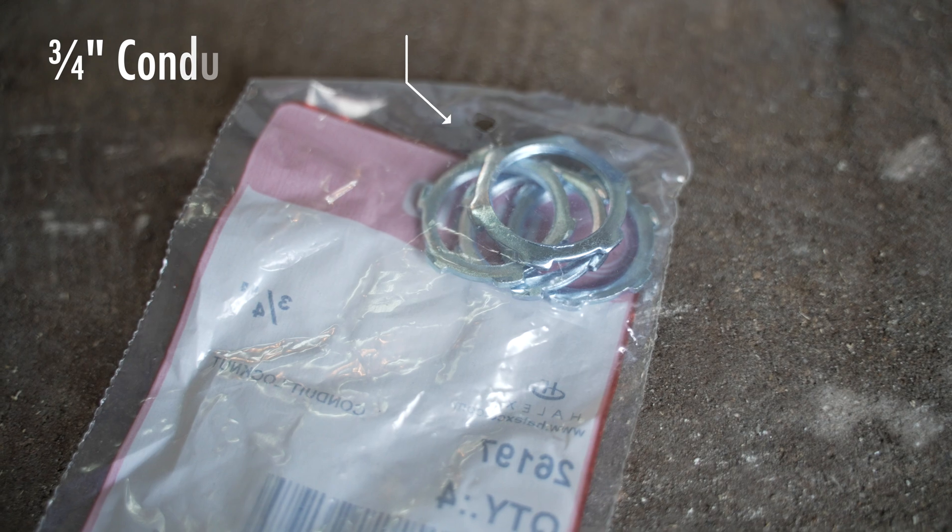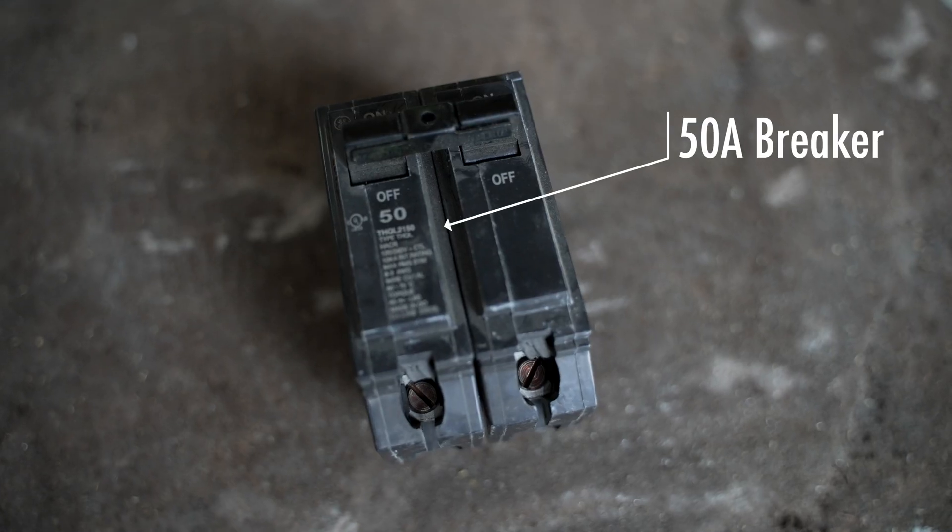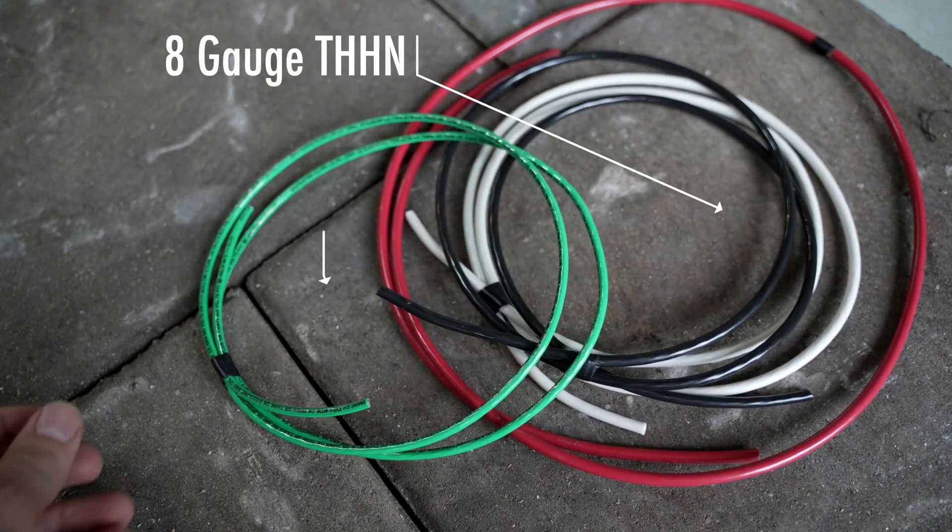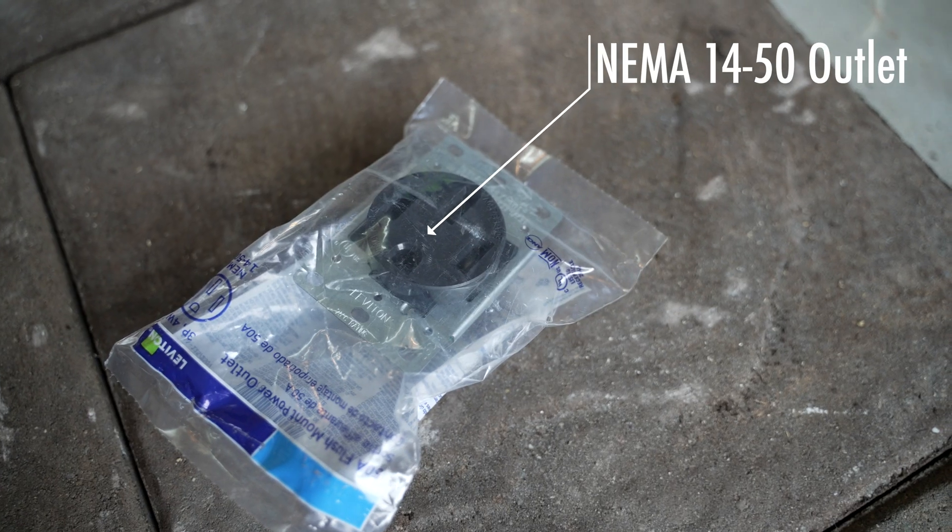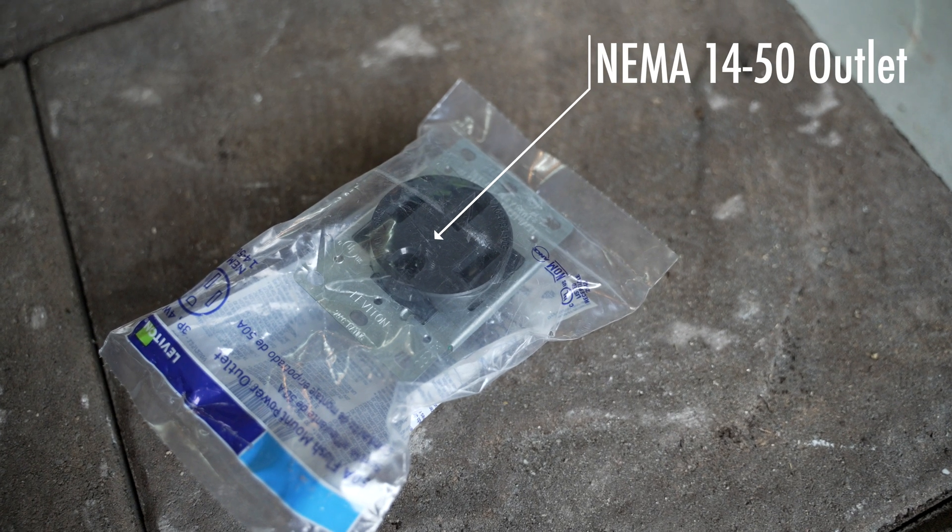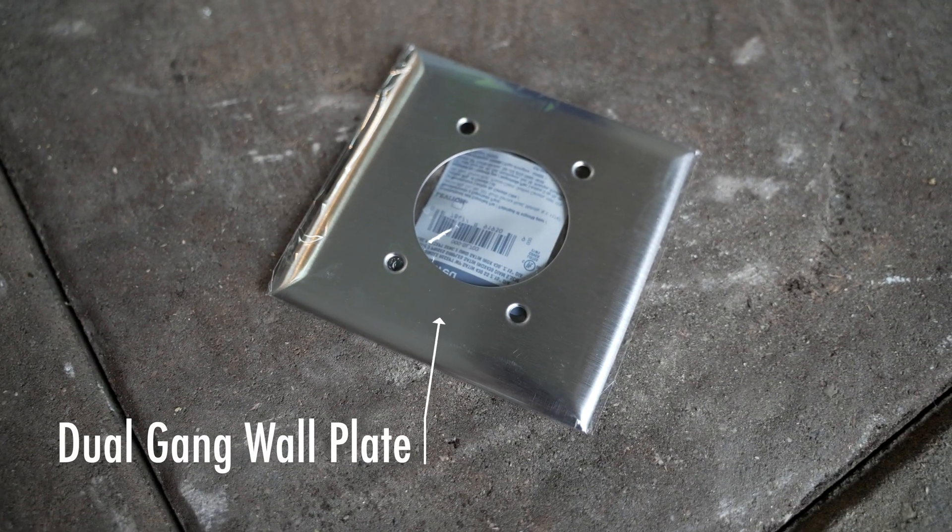There's some lock nuts to attach the coupling to the panel, some screws, and a 50 amp breaker. We also have the wire. There's 8 gauge for the conductors and 10 gauge for the ground, and then a NEMA 1450 outlet. We also have the cover plate for that outlet.